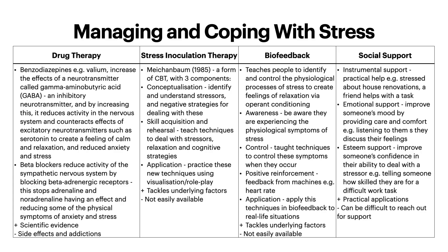There are four ways to cope with stress. Starting off with drug therapy: you can be placed on benzodiazepines such as Valium, which increase the effect of a neurotransmitter called gamma-aminobutyric acid (GABA), an inhibitory neurotransmitter. By increasing GABA, it reduces activity in the nervous system and counteracts the effects of excitatory neurotransmitters such as serotonin, creating a feeling of calm, relaxation and reduced anxiety and stress. Then you have beta-blockers, which reduce activity of the sympathetic nervous system by blocking beta-adrenergic receptors. This stops adrenaline and noradrenaline having an effect, reducing some of the physical symptoms of anxiety and stress. There is scientific evidence to support these drugs, but of course there are side effects and addictions, and they don't actually address the baseline issue of why the individual is stressed in the first place.